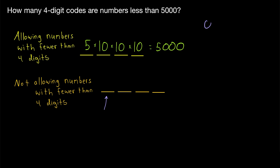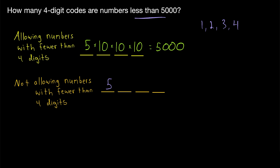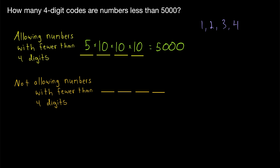Well, we can't pick 0, because that would lead to a number that has fewer than four digits. So the smallest the first digit can be is 1. And just as before, the largest the first digit can be is 4, because if our first digit was 5, we would end up with a number greater than or equal to 5,000, which we're not counting. So we can pick 1, 2, 3, or 4 for our first digit. Then we can pick whatever we like for the remaining digits — 10 choices each. That comes out to 4,000.